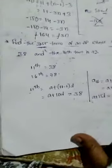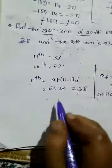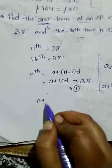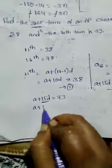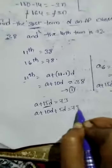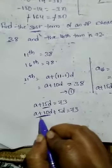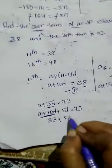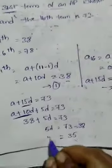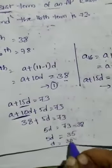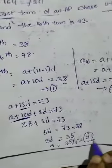So solve these equations. This is first, this is second equation. A plus 15D equals 73. 15D divided into 10D plus 5D. We know the A plus 10D value is 38, so 5D equal to 73 minus 38, which is equal to 35. 5D equal to 35, D equal to 35 by 5, equal to 7. Common difference is 7.